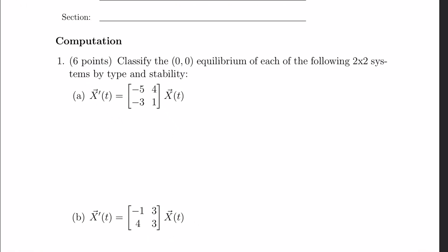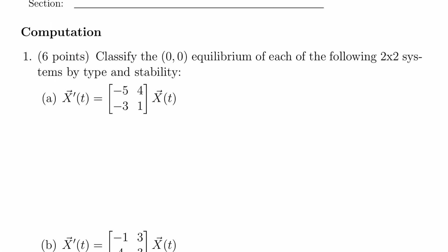We'll take a look at finding these eigenvalues and using those to classify the zero-zero equilibrium point. I'm going to use the trace-determinant eigenvalue equation, which says that the eigenvalue lambda is equal to tau plus or minus the square root of tau squared minus four times the determinant, all over two.